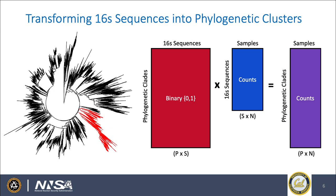In our approach, we are transforming this 16S sequence data into phylogenetic clusters. Shown on the left is the phylogenetic tree of all sequences found in the pristine and contaminated groundwater samples. We transform this tree into a binary matrix, then multiply that binary matrix by the 16S sequences-by-samples matrix of counts of each organism, transforming it into a phylogenetic clades-by-samples matrix that we use as the input for our machine learning algorithm.